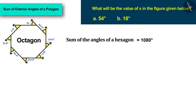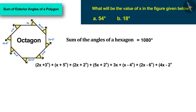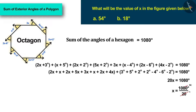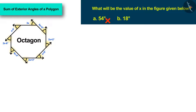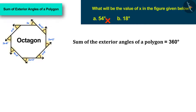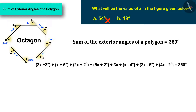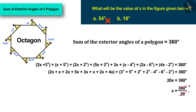They then set the sum of unknown angles equal to 1080 degrees and calculate x = 54 degrees, which is the wrong answer. The correct approach: the sum of exterior angles of a polygon is always 360 degrees, so setting the sum of all external angles equal to 360 degrees and solving gives x = 18 degrees, which is the correct answer.